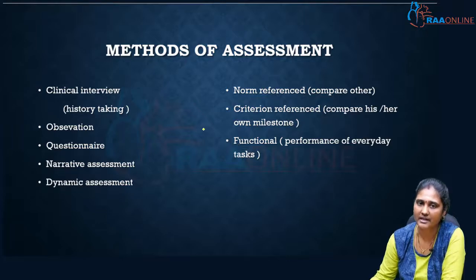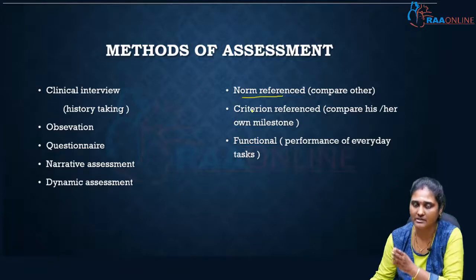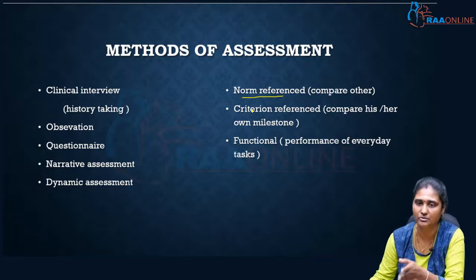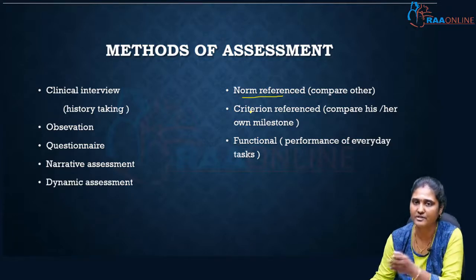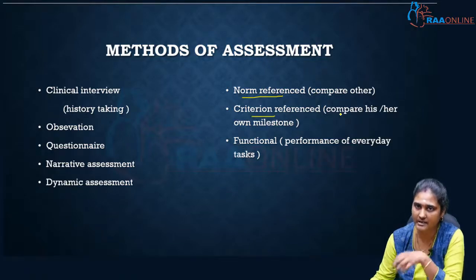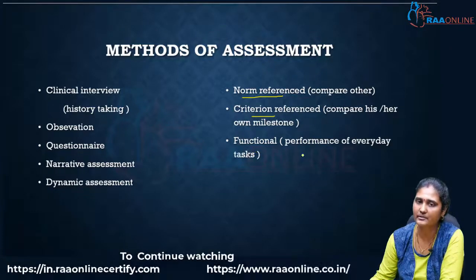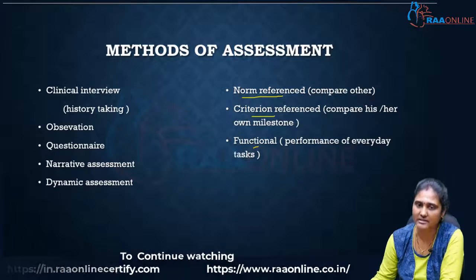By doing this assessment, side by side we are comparing the child with other children — that is the norm-based reference, where the same peer age group is able to do certain tasks and we compare what this child is able to do. Or we use criterion reference, which is comparing the same child with their own milestones. And there is also functional reference, which is based upon the performance of everyday tasks.